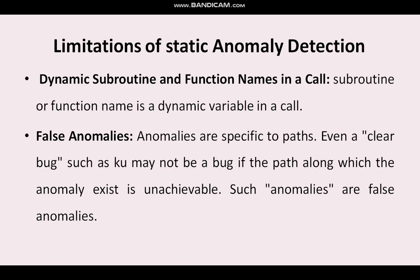Some false anomalies will also occur. Anomalies are specific to paths — even a clear bug such as KU may not be a bug. K means killed, U means used. Once killed, a variable can be used again but then the variable may not be existing, and the path may be unachievable. Such anomalies are called false anomalies. False anomalies are again caused by runtime-created variables that can be created and then deleted, so whenever you use them they won't be available.